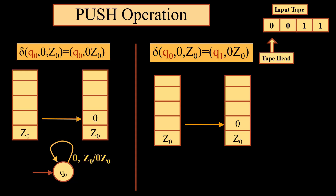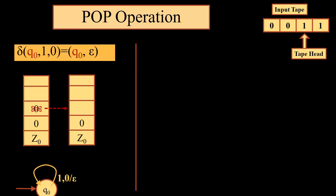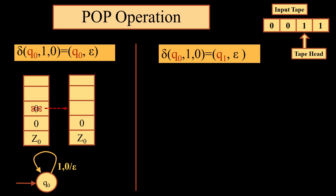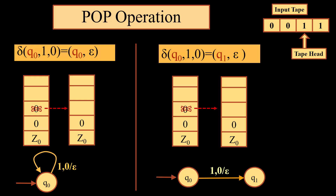On the other hand, if we have q0, 0, z0 leads to q1, 0, z0, that means we have a transition from state q0 to q1 and the symbol 0 is pushed onto the stack on reading the symbol 0 from the input. For a pop operation on the same state from q0 to q0, it is represented by a transition function having epsilon, which indicates that when the tape reads input 1 and the symbol on top of the stack is 0, q0 epsilon means 0 is popped from the stack. Likewise, sigma q0 1 0 is q1 epsilon means a state transition from q0 to q1 occurs, and on reading input 1, the element popped from the top of the stack should be 0.